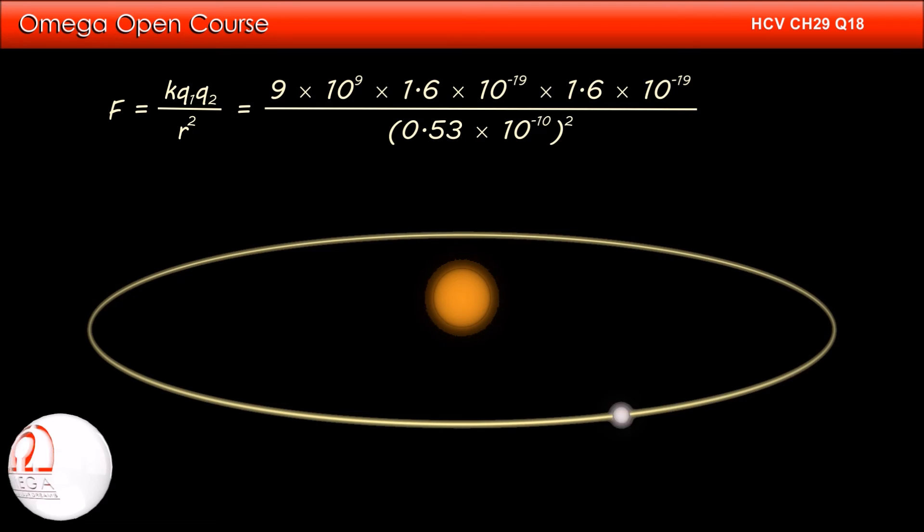The value of K is 9 × 10⁹ Newton meter squared per Coulomb squared. The magnitude of charge on both the electron and the proton is 1.6 × 10⁻¹⁹ Coulombs, and the distance between the proton and electron in ground state is 0.53 × 10⁻¹⁰ meters.